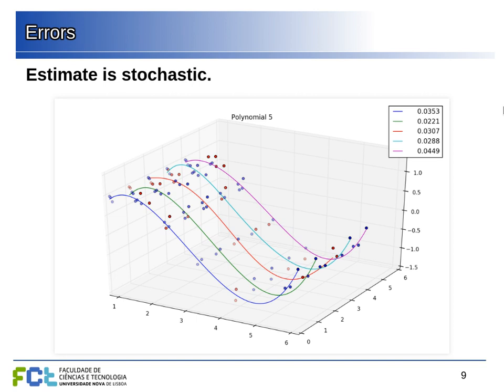We split the dataset into training and test sets randomly, so each time we run everything we can get different points in one set or the other. This may be unfamiliar if you're used to software that always gives the same result for the same inputs. When we start doing random sampling or splitting sets at random, we cannot expect to always obtain exactly the same value.